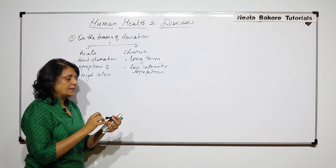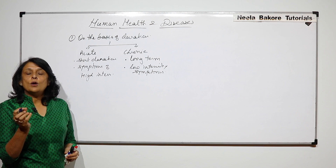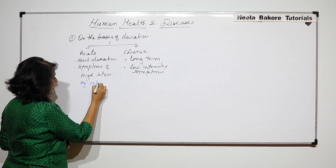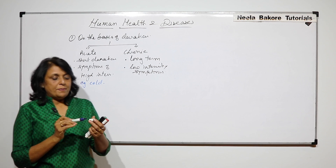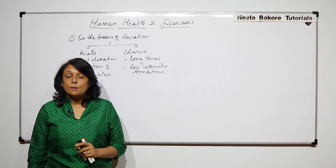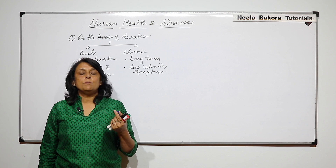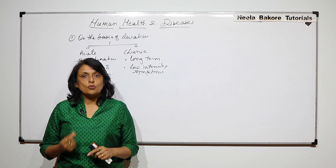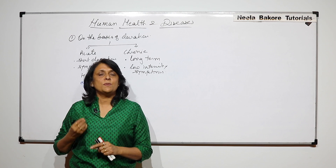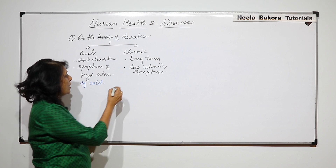To make these two categories clear, take the example of normal rhinitis or cold. Suddenly you start feeling inflammation in the nasal epithelium — you get a running nose, watery nose, watery eyes, and there can be itching or irritation in the throat. Symptoms suddenly appear and in two, three, four days or maximum seven days, the symptoms are going to subside.